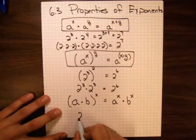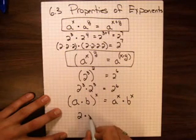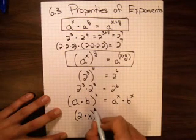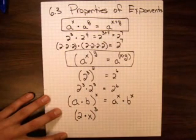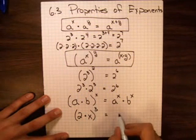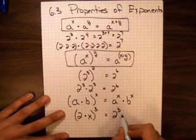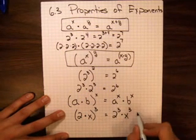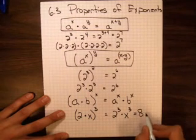So if I have something like 2 times x, and I want to raise that to the power of 3, this would be the same as 2 cubed times x cubed, or 2 cubed being 8x cubed.